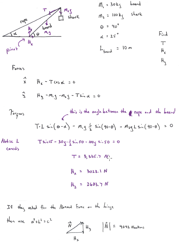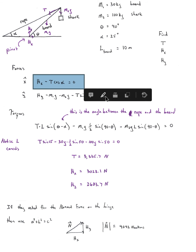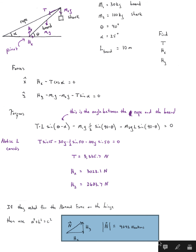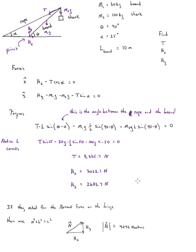Once we solve for the tension, we can come back to the force equations to find HX and then HY. If the problem asks for the magnitude of the hinge force, we use the Pythagorean theorem with HY and HX — since the hinge force points up and to the right — to get the total normal force at the hinge.